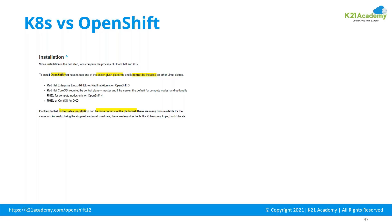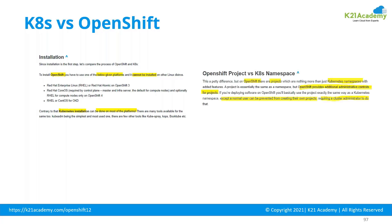Kubernetes, on the contrary, can be installed on most operating system platforms. The master node is always Linux or Unix flavor — as of Kubernetes version 1.22 you can't run master node on Windows. Worker nodes can be both Linux and Windows. So Kubernetes supports a lot more operating systems.